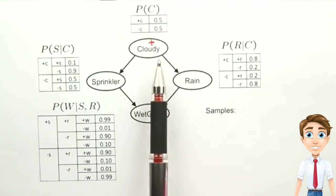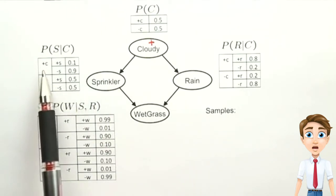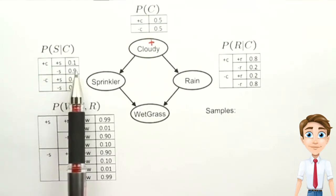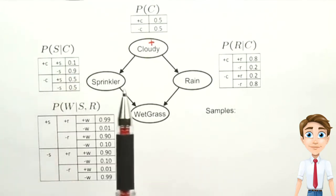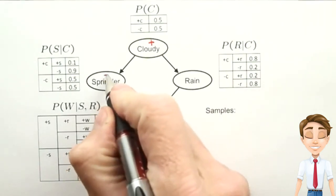Now that variable is defined, we can choose another variable. In this case let's choose sprinkler, and we look at the rows in the table for which cloudy, the parent, is positive. And we see we should sample with probability 10% of positive S and 90% of negative S. And so let's say we do that sampling with a random number generator, and it comes up negative for sprinkler.